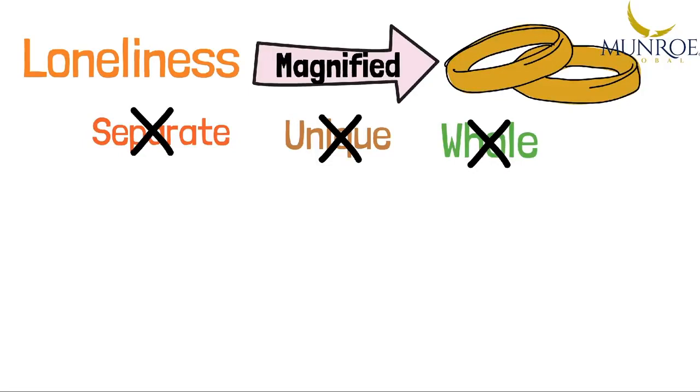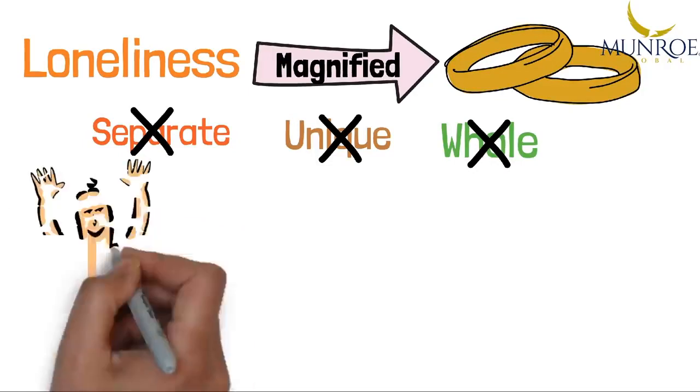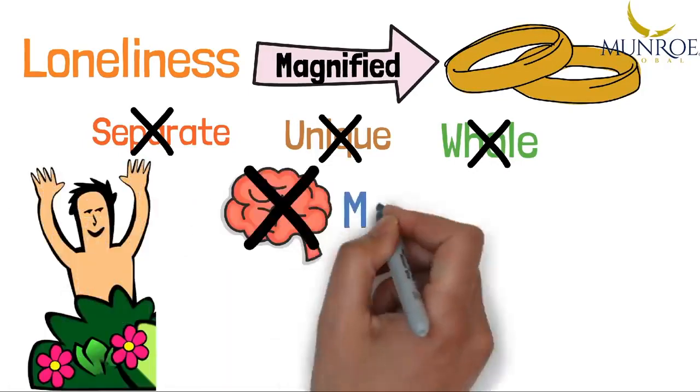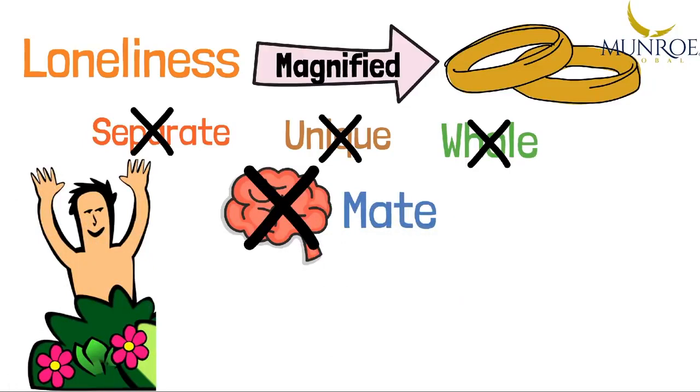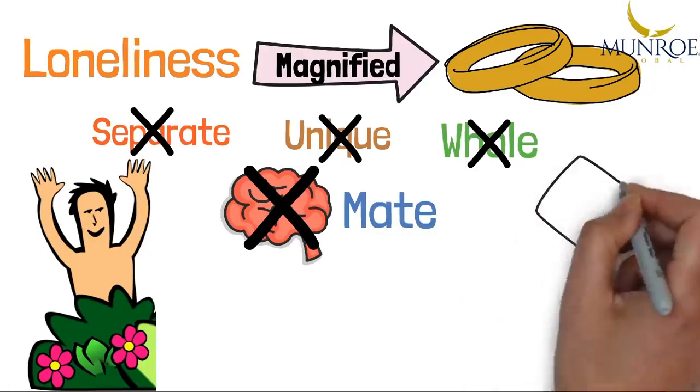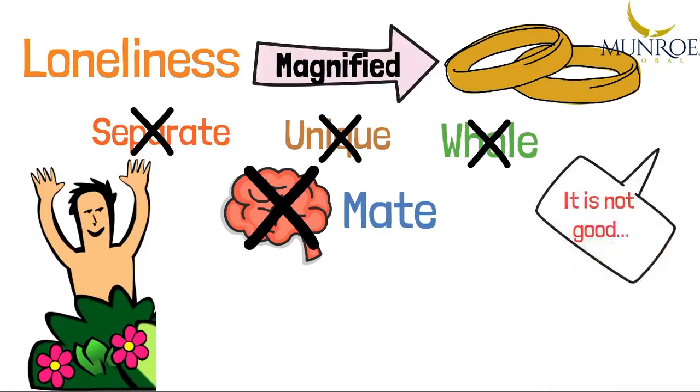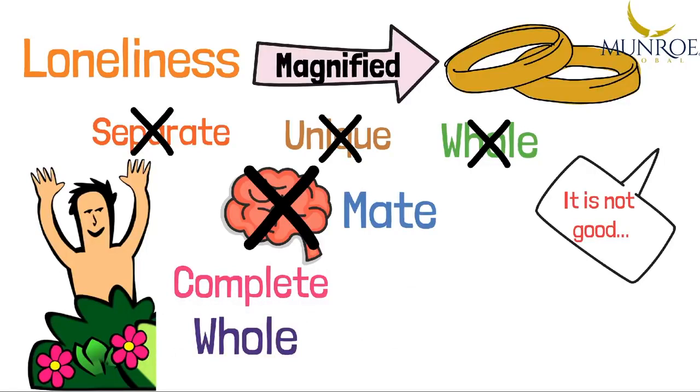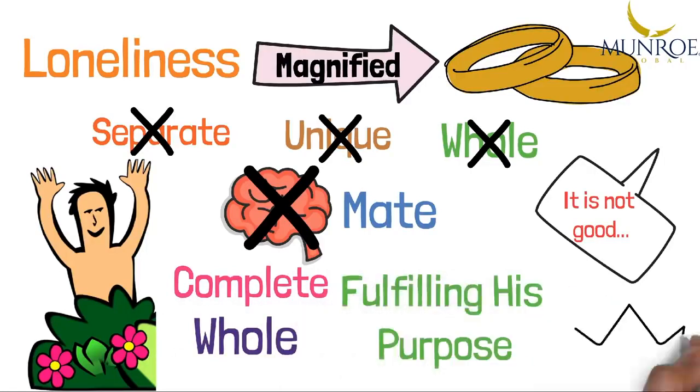Singleness is an amazing thing. Adam did not know he needed a mate. God was the one who said it is not good—Adam didn't care, wasn't interested. Why? He was so complete, so whole, so fulfilled, fulfilling his purpose, naming animals, ruling the garden, bringing order to the place. He was so busy he didn't know he needed a mate.